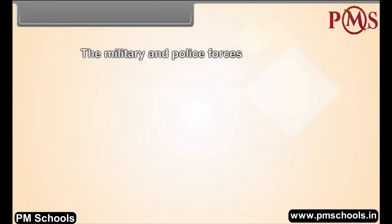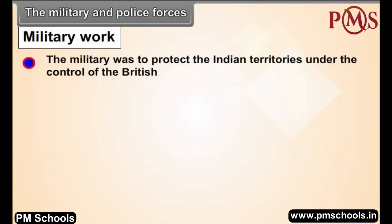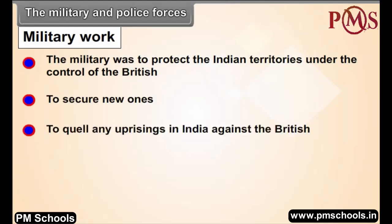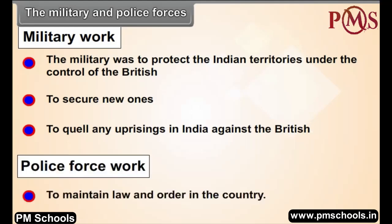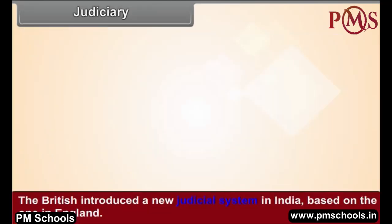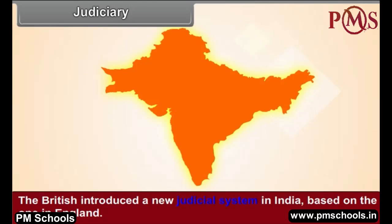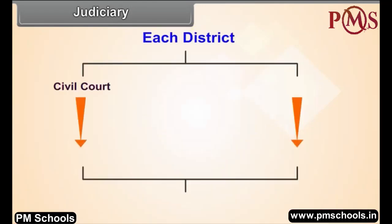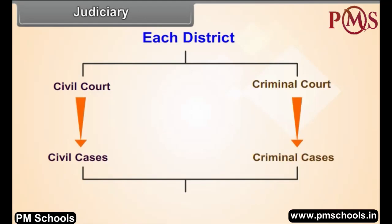The military was to protect Indian territories under the control of the British, to secure new ones, and to quell any uprisings against the British. The function of the police force was to maintain law and order. The British introduced a new judicial system in India based on the one in England, with civil and criminal courts in each district and High Courts to review their judgments.